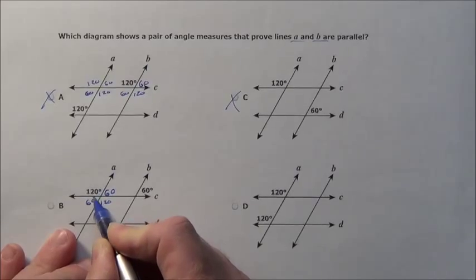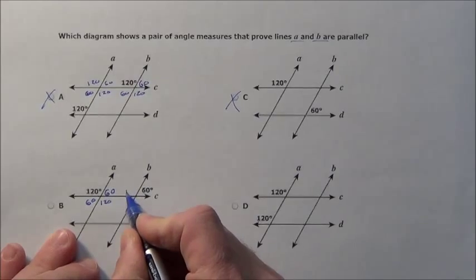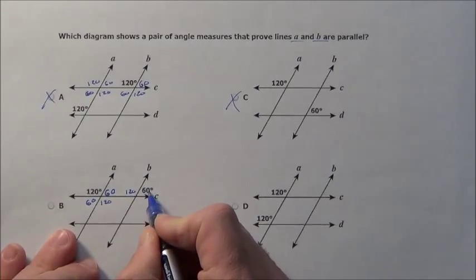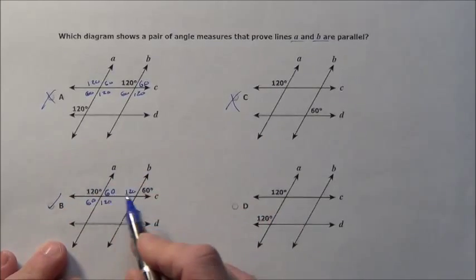Or again, linear pair there, linear pair there, meaning that you've got to add up to 180. We could pick these up and move them. So it would go 120 there, the 60 would go there. Hey, it matches. This would prove that A and B are parallel.